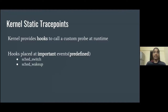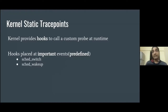For example, we have the sched_switch trace point, which is defined when a process context switches. We have the sched_wakeup trace point, which is defined when a process is woken up. At various interesting places in the kernel code, we have these hooks defined. And when we define a particular function to plug into these hooks, we can get to know what the system is doing.